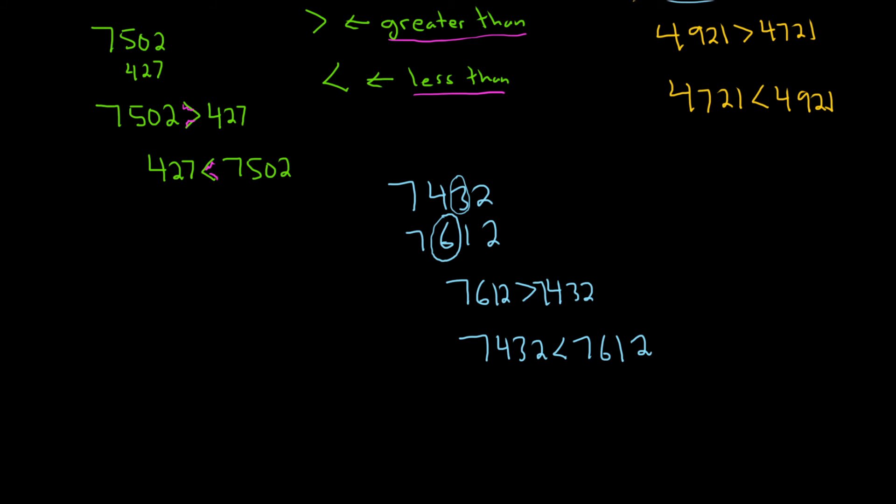Let's do another one. I'll do it over here in a different color. Let's say we had 670 and 670. You might say, hey, these are the same number. They are. So whenever they're the same number, what you do is you put this symbol between them. This symbol means equals. So you write 670 equals 670. This symbol means equals.